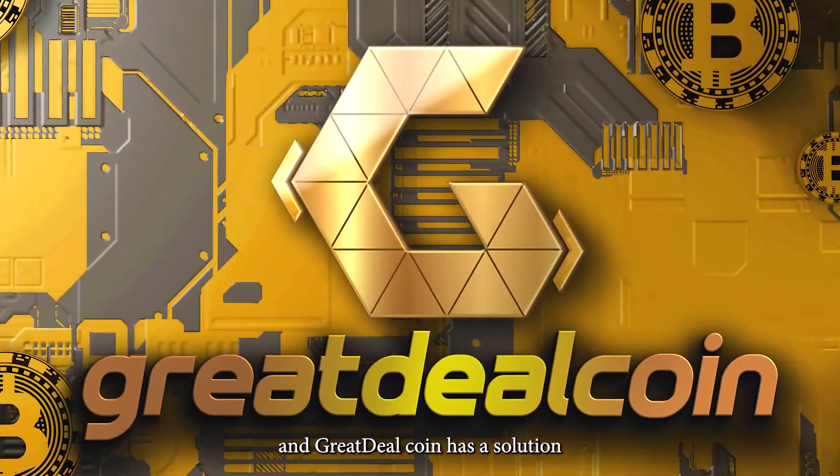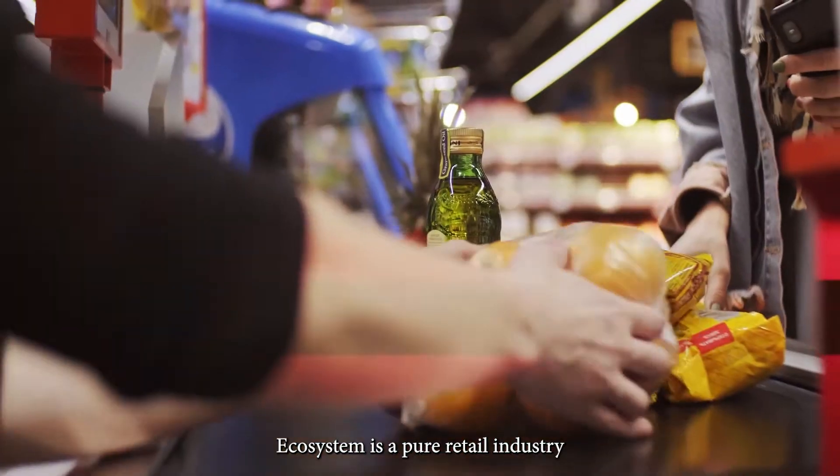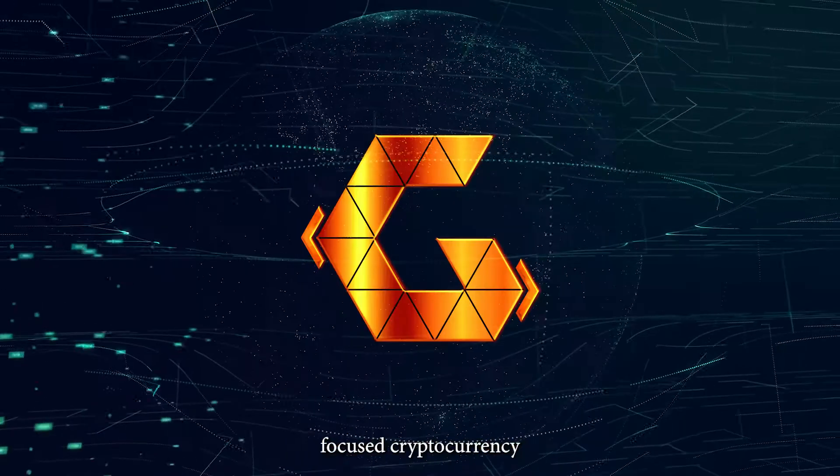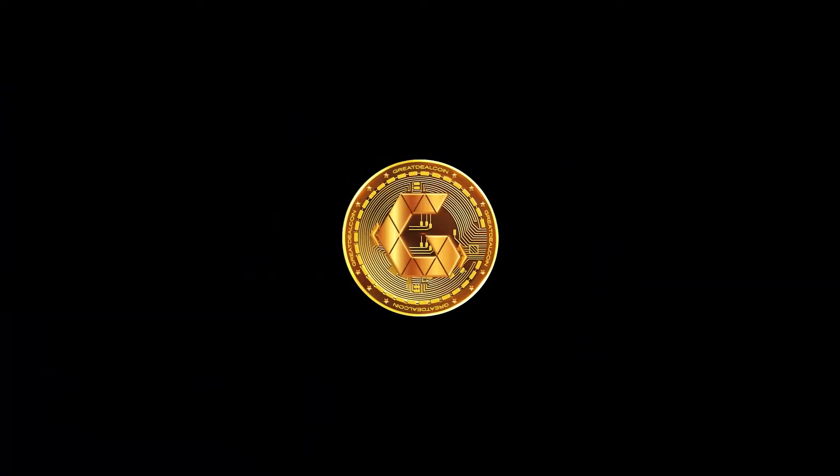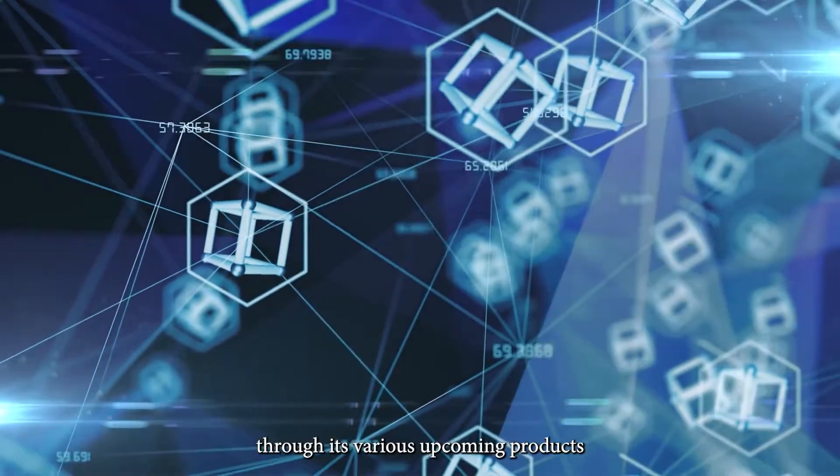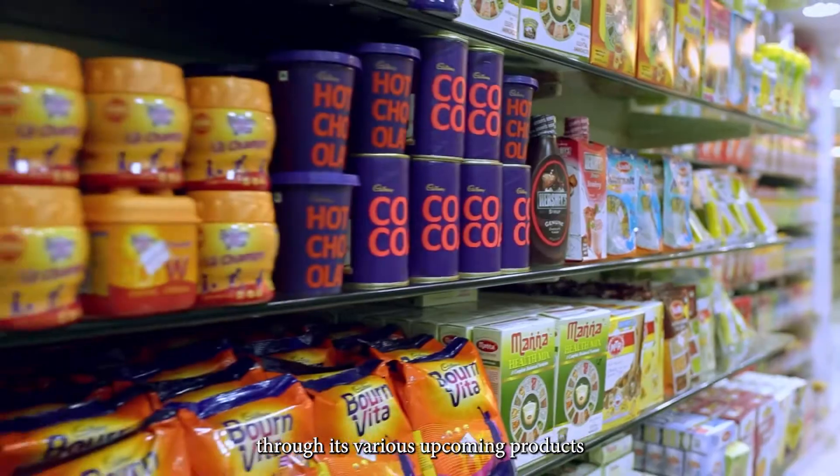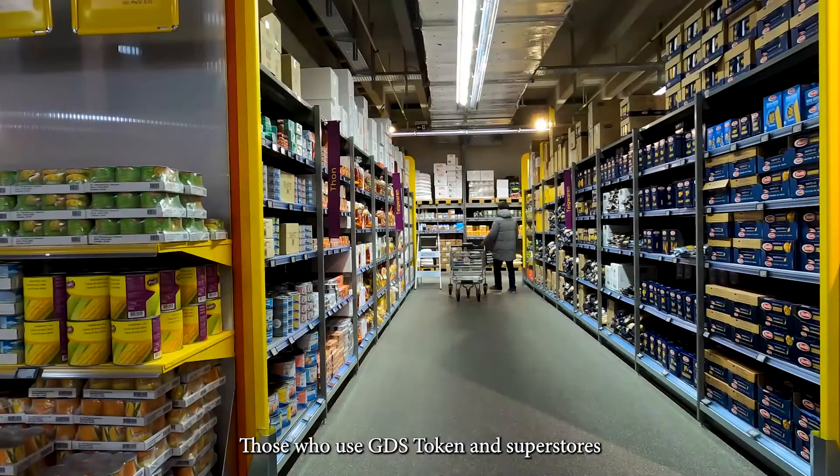Superstores and Great Deal Coin has a solution. Great Deal Coin ecosystem is a pure retail industry-focused cryptocurrency that combines the power of retail markets and blockchain through its various upcoming products. Those who use GDS token in superstores as payment method will receive a special discount and offers on their bills every time.